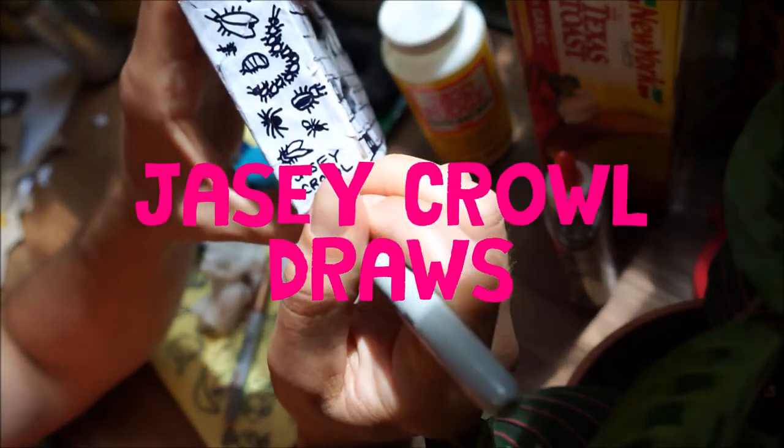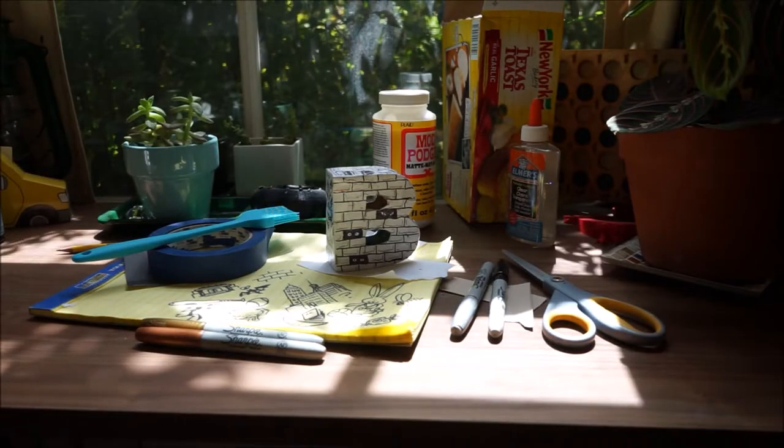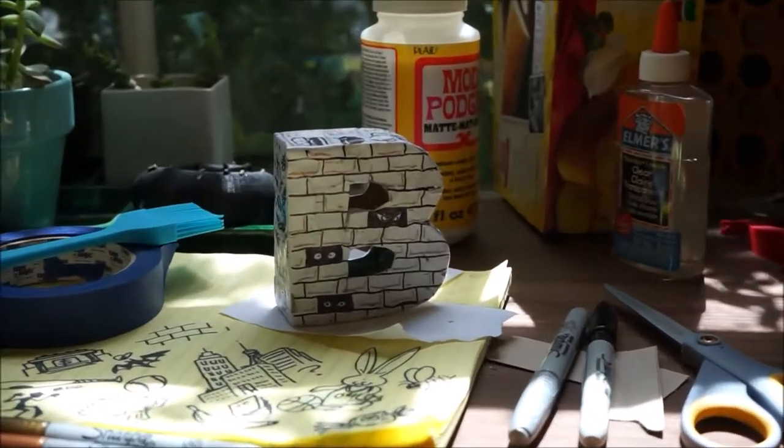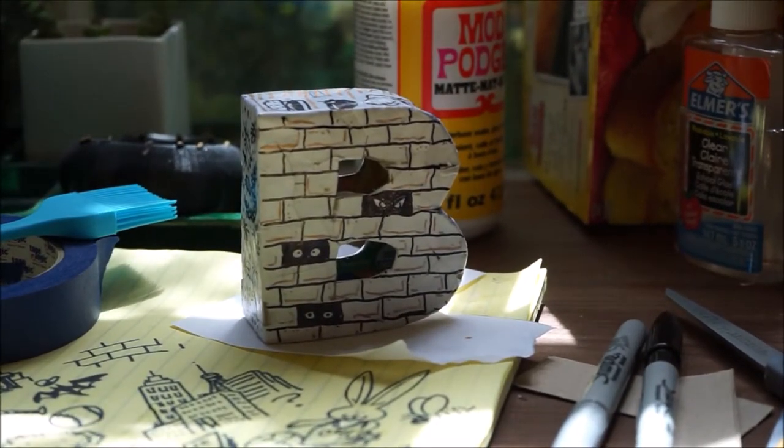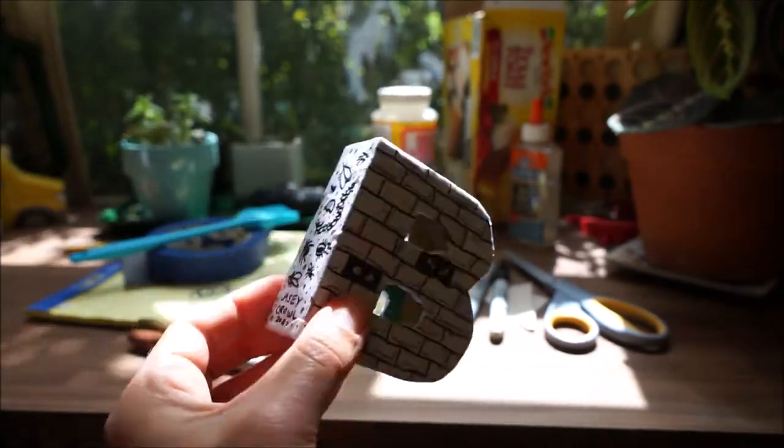Hi, this is JC and this is JC Crowell Draws. Today we're going to be building a B using different stuff from around the house. Then we're going to draw all over the B different designs of the letter B.